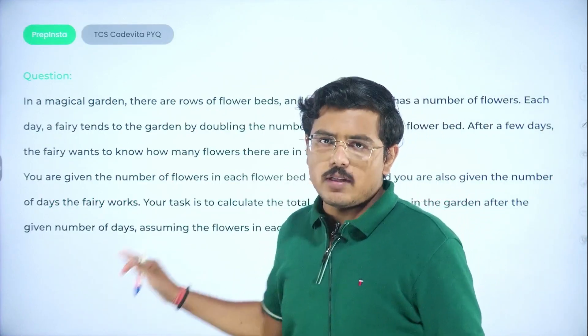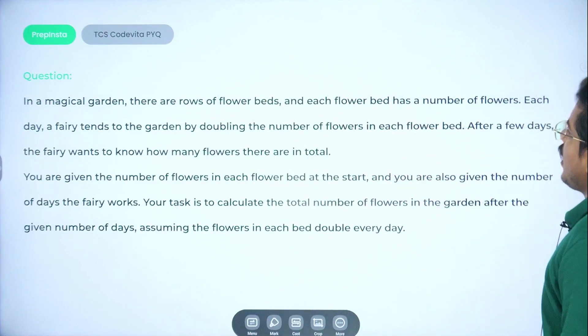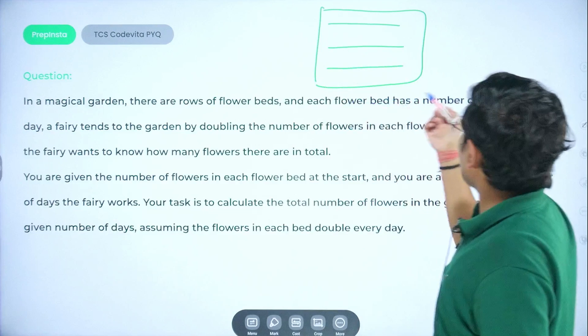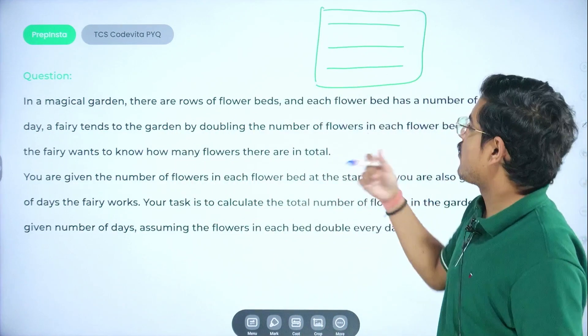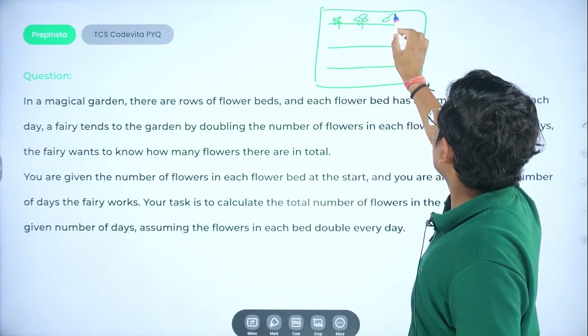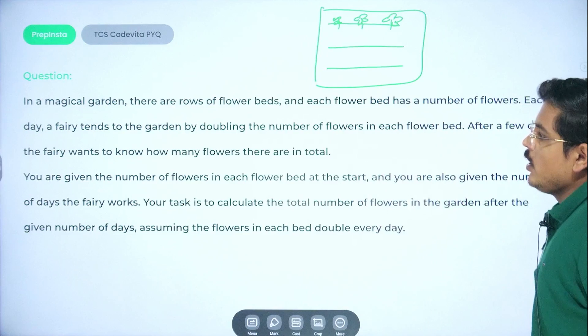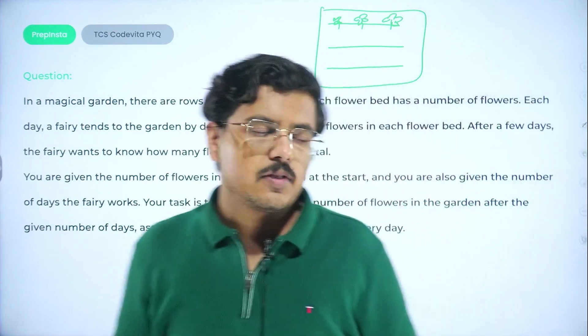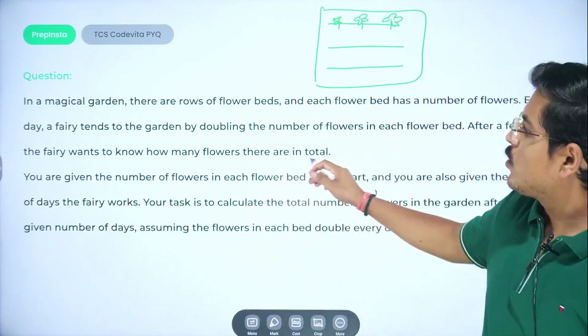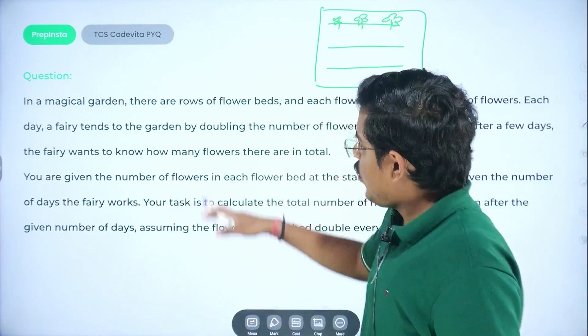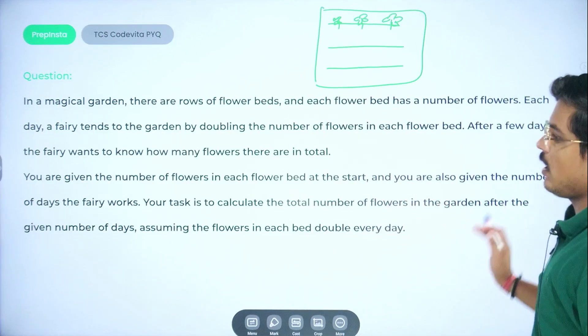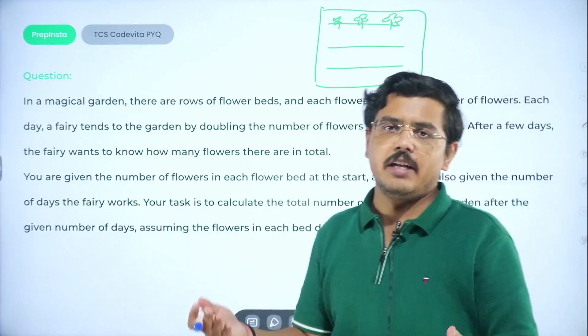Now, straight away moving to the question without wasting any time. In a magical garden, there are rows of flower beds and each flower bed has a number of flowers. Each day, a fairy tends to the garden by doubling the number of flowers. After a few days, the fairy wants to know how many flowers there are in total at that particular day. You are given the number of flowers in each flower bed at the start and you are also given the number of days the fairy works. Your task is to calculate the total number of flowers in the garden after the given number of days, assuming the flowers in each bed double every day.